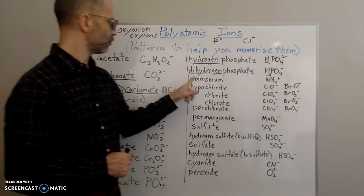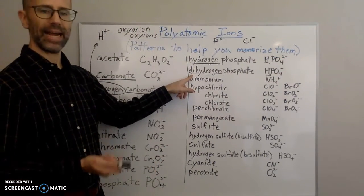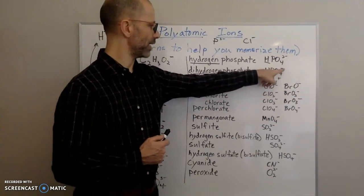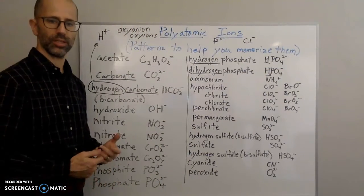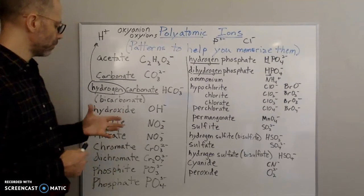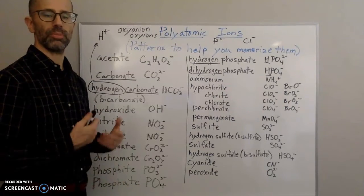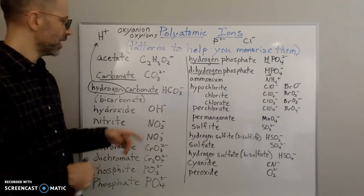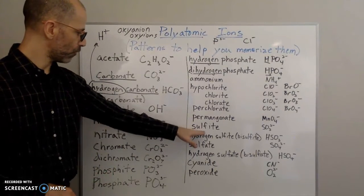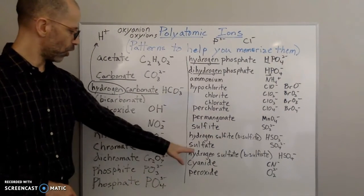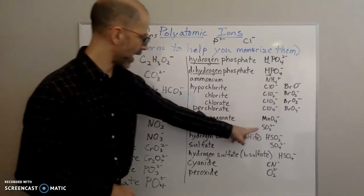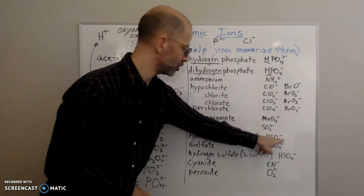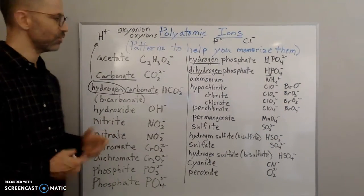What if you add another hydrogen? Instead of hydrogen, it's dihydrogen — two hydrogens. So dihydrogen phosphate is H2PO4, and the charge drops another step to 1-. So if you remember what the charge is on phosphate, you can work out hydrogen phosphate and dihydrogen phosphate. The same logic applies to sulfite and hydrogen sulfite, or sulfate and hydrogen sulfate — adding a hydrogen drops the charge from 2- to 1-.